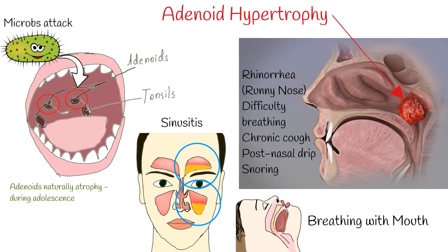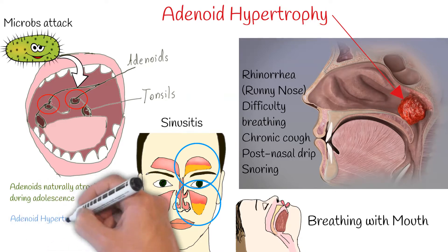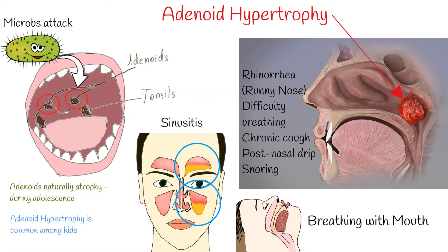The adenoids naturally atrophy and regress during adolescence, which is why adenoid hypertrophy is more common among children than adults. Almost a third of kids have adenoid hypertrophy, but generally it is self-resolving due to age-related adenoid atrophy. Adenoid hypertrophy can occur because of both infectious and non-infectious etiologies, including viral and bacterial pathogens.